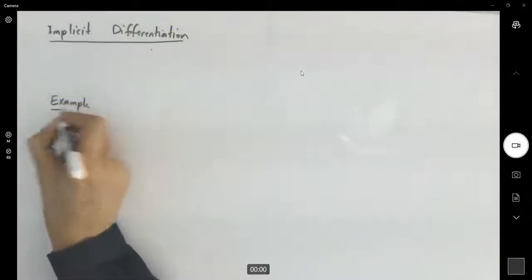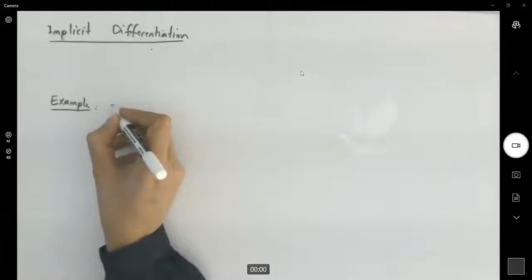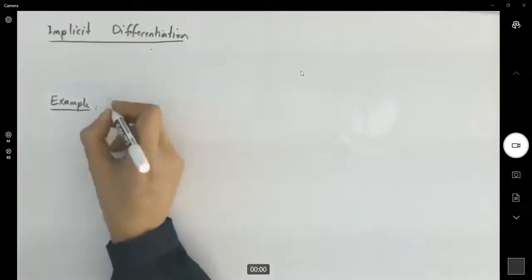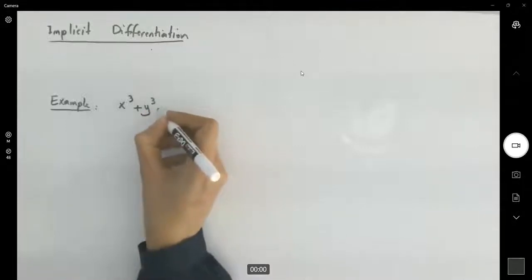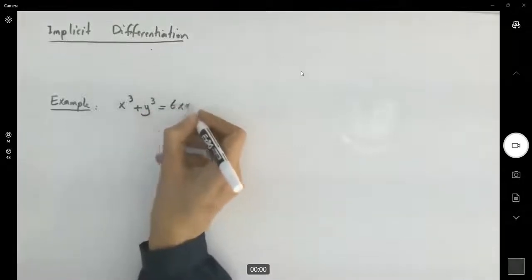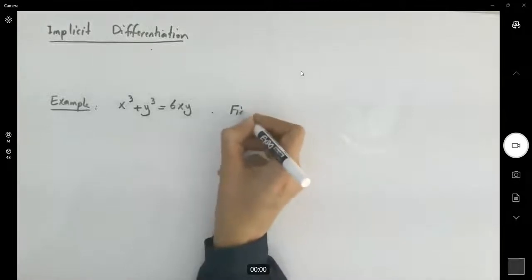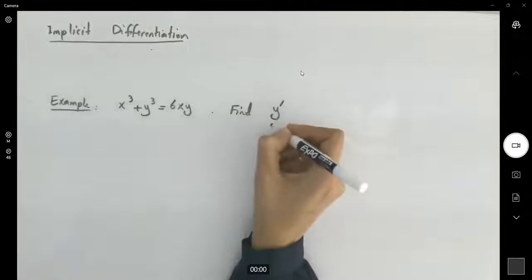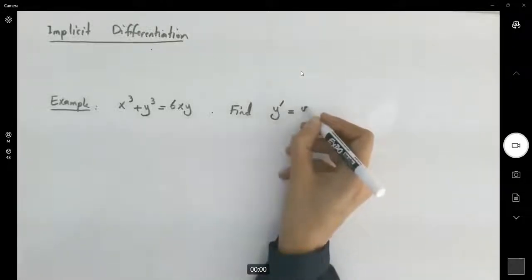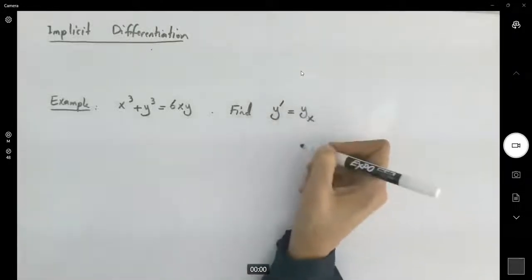The example says, suppose you have the following relation: x³ + y³ = 6xy. Find the derivative of y with respect to x.